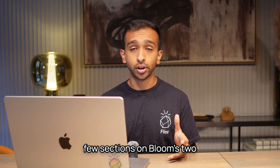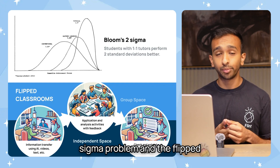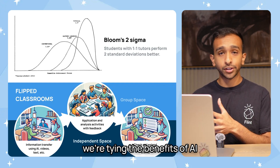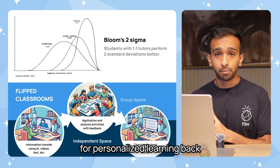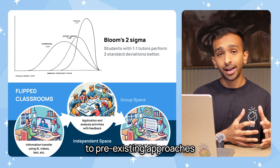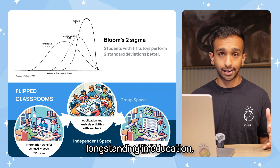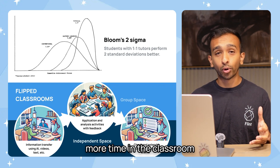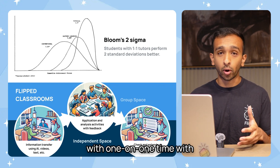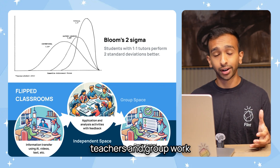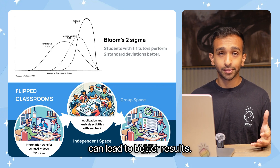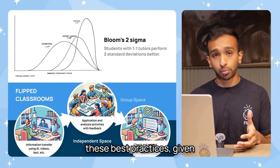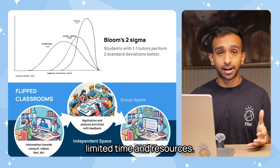As you read through the next few sections on Bloom's Two Sigma problem and the flipped classroom, you'll notice that we're tying the benefits of AI for personalized learning back to pre-existing approaches and challenges that have been longstanding in education. More personalization and one-on-one time with teachers can lead to better results, and what AI enables teachers to do is better implement these best practices given limited time and resources.